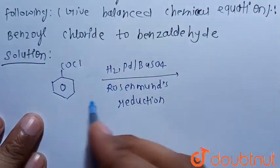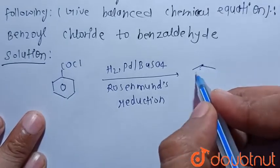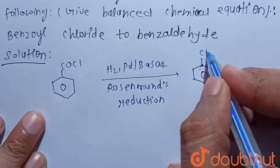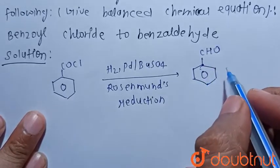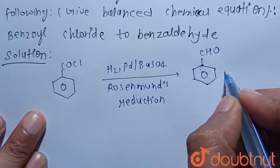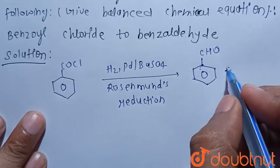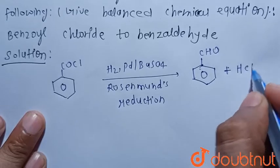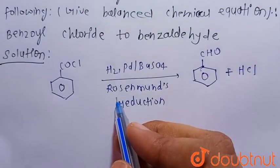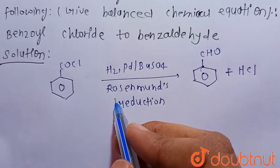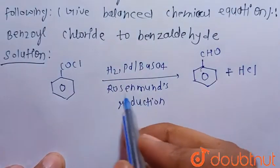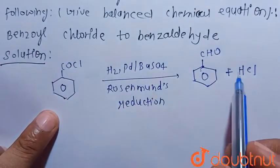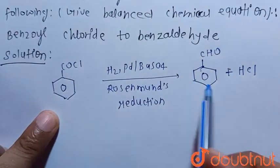The product formed is benzaldehyde plus HCl. This is the required balanced chemical equation. We can clearly see that the number of atoms of hydrogen, chlorine, carbon, and oxygen are the same on the reactant side and product side.